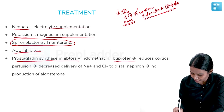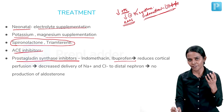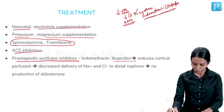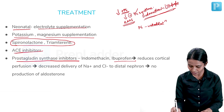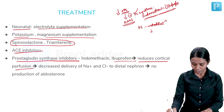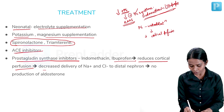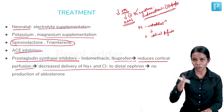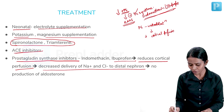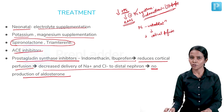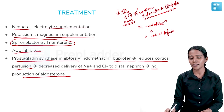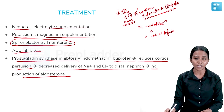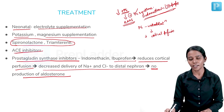Indomethacin works by blocking prostaglandin synthesis. Prostaglandins cause vasodilation in the kidney; by inhibiting them, there is vasoconstriction in the cortex, decreased delivery of sodium and chloride to the distal nephron, and reduced aldosterone production. Therefore, indomethacin is the treatment of choice for Bartter syndrome.